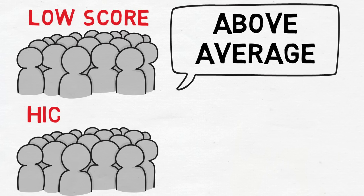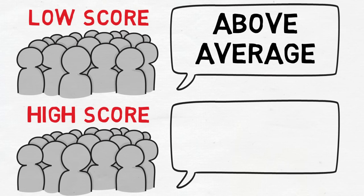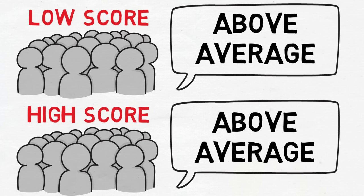Students who scored the highest had more accurate perceptions of their abilities, but they made a different mistake. Paradoxically, the highest scoring students underestimated their performance. They knew they were better than average at the test, but because it was easy for them, they assumed it was easy for everyone. They didn't know that their ability was at the top percentile.